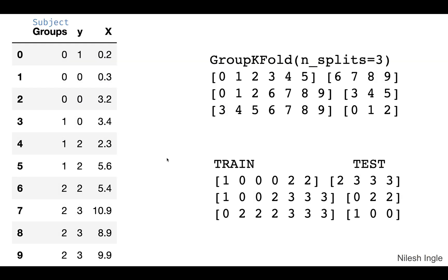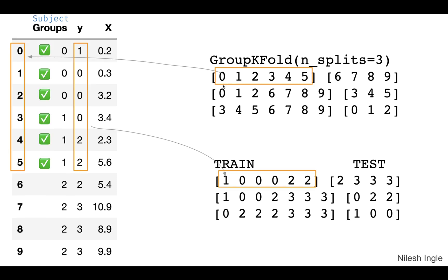Here is an example of that. We have the X values, Y values as the target, and the groups. When we perform a group K-fold with three splits, these are the indices we get. Below is the train data and the test data extracted from the dataframe using those indices. Each row is a different iteration — three splits give us three different rows and three different train and test sets. In the very first split, train indices 0 through 5 are assigned to the train set, marked here by green check marks.